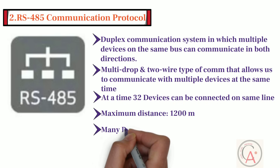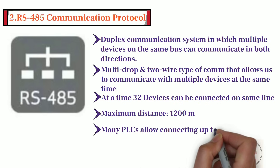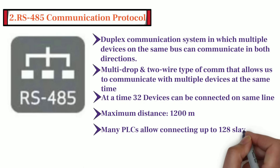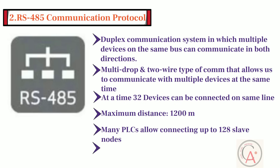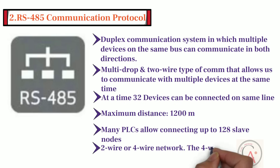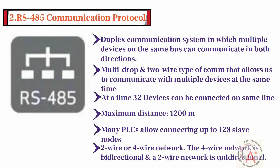Many PLCs allow connecting up to 128 slave nodes. By using repeaters, several devices and nodes can be extended. RS-485 can be used as a two-wire or four-wire network. The four-wire network is bidirectional and the two-wire network is unidirectional.